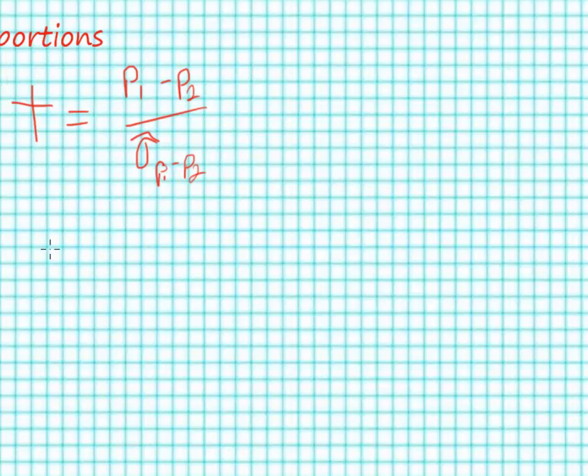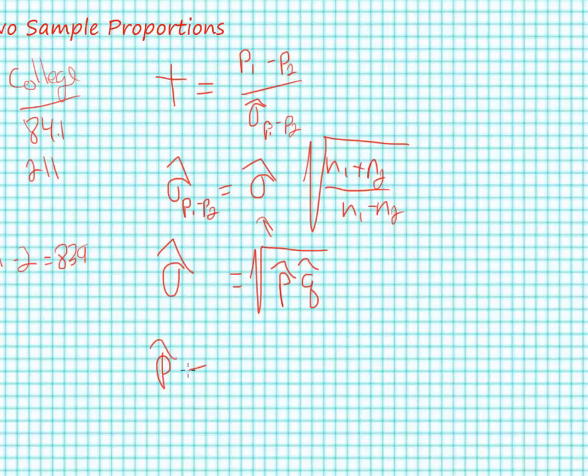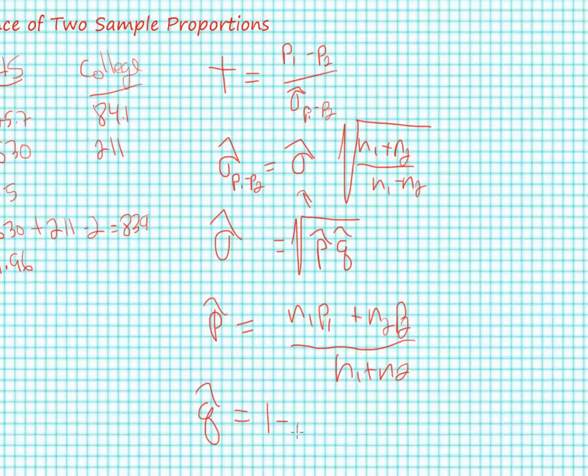Let's break it down into little pieces. Our standard error itself is equal to an estimate of a combined standard deviation times the square root of (n1 plus n2) over (n1 times n2). This value sigma hat is itself equal to the square root of p hat times q hat. And p hat is equal to (n1*p1 plus n2*p2) over (n1 plus n2), and q hat is equal to 1 minus p hat.